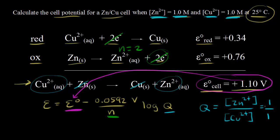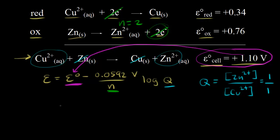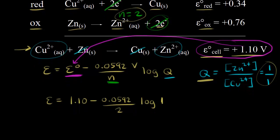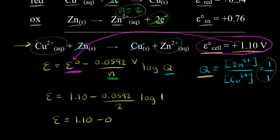So we have one over one, meaning the reaction quotient for this example is equal to one. Let's plug in everything. The cell potential E is equal to the standard cell potential — that was 1.10 volts — minus 0.0592 over N, where N is the number of moles of electrons, which equals two, times the log of Q. Our reaction quotient is one, and log of one is equal to zero. So the cell potential is equal to 1.10 minus zero, which gives us 1.10 volts.